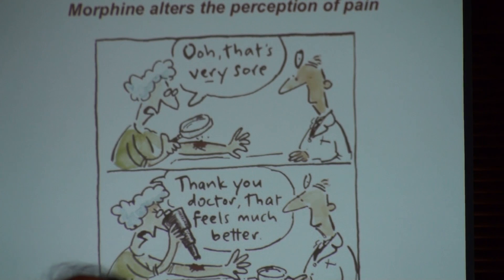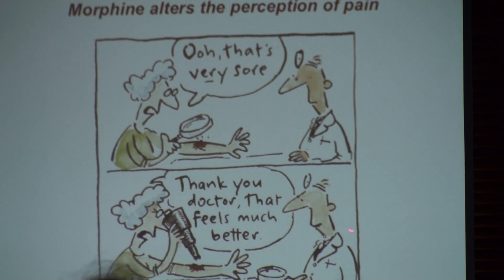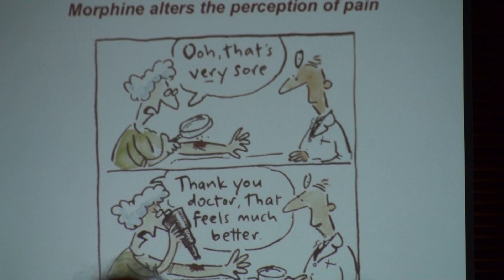So if you look at the cartoon — this is exactly how I teach a medical student. Morphine and ordinary perception of pain: this person has a magnifying glass and looks at the injury and says, 'This is really sore.' And then the physician gave her a microscope turned upside down. If you look through the microscope upside down, things look very small. So the sore is still there, but it's very small.